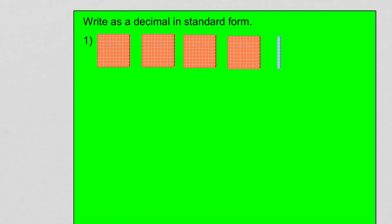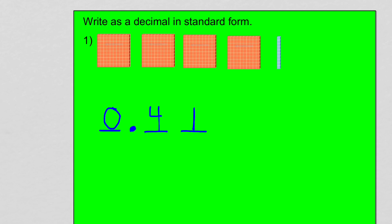Here we have another picture. I'm always going to have the kids put a spot for the ones, the decimal point, a space for the tenths, and a space for the hundredths. They also have a place value chart attached to their desk — ones, tenths, hundredths. Now let's count how many tenths we have — we have four tenths, so I'll put a four in the tenths spot. We have one hundredth, so I'll put a one in the hundredths spot. I have zero wholes. So we'd say that number is forty-one hundredths. Right now we're just focusing on writing this in standard form.